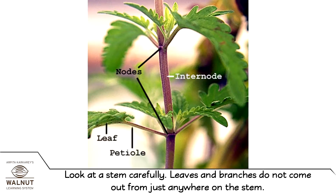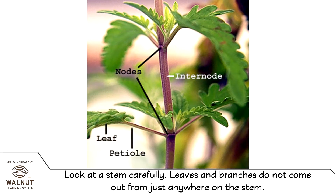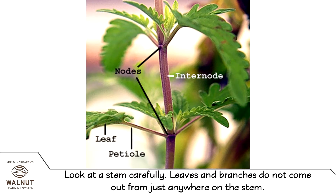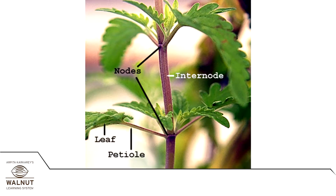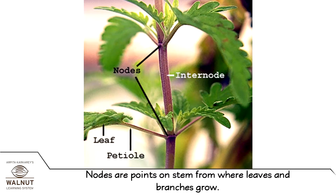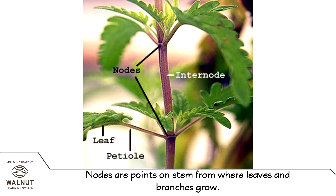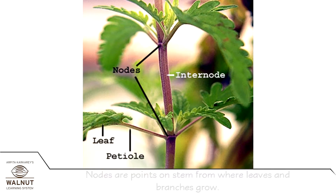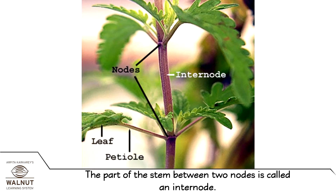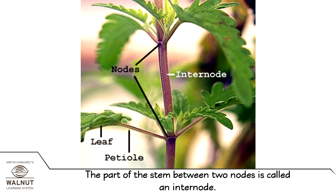Look at a stem carefully. Leaves and branches do not come out from just anywhere on the stem. Nodes are points on the stem from where leaves and branches grow. The part of the stem between two nodes is called an inter-node.